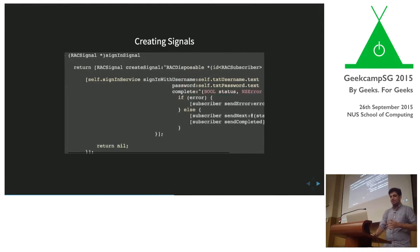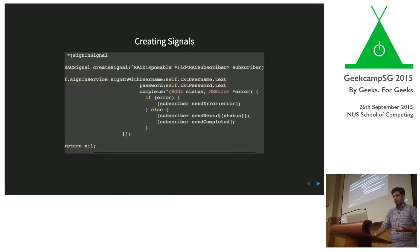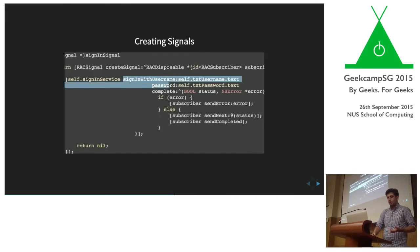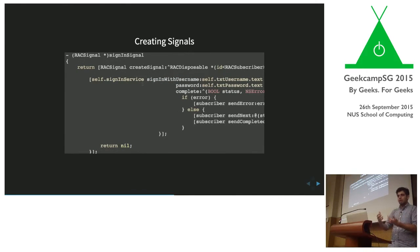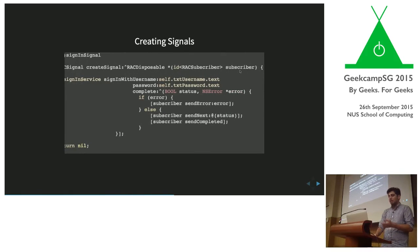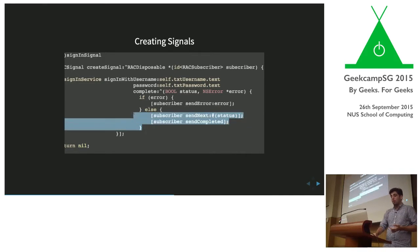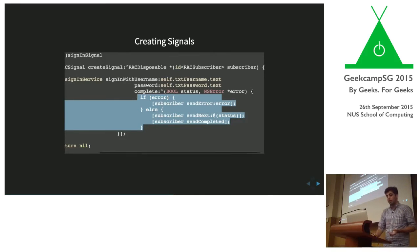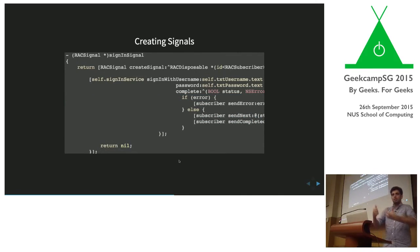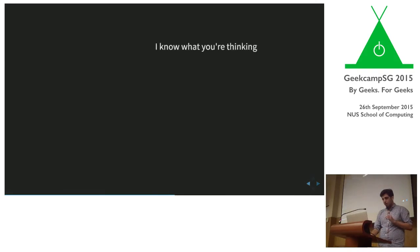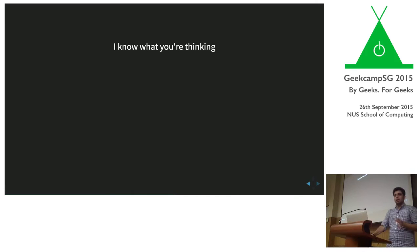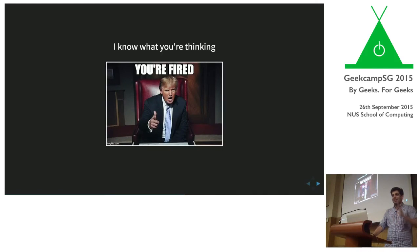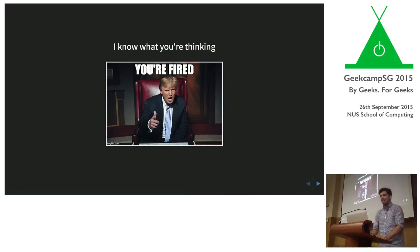To create a signal, every signal creation method will pass a subscriber as an argument, and you send the subscriber whatever events you want based on the results. For instance, if I have an asynchronous sign-in operation that takes a callback, I convert it: if I get an error, I send the error to the subscriber; otherwise I send whatever values I need to. It's fairly simple to convert asynchronous callback-based methods into signals.